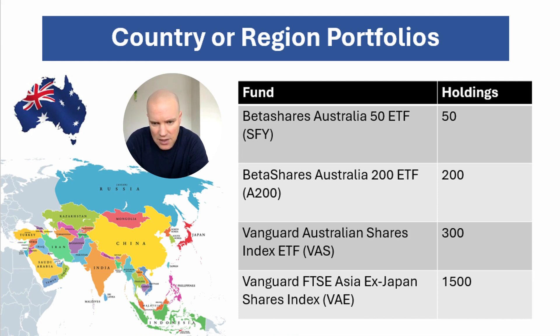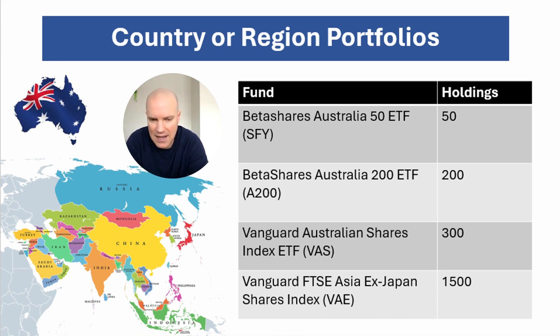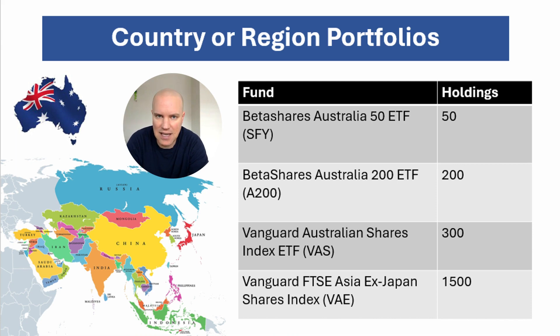I just want to point out the last ETF as an example. While it's labelled as the Asian ETF from Vanguard — the VAE — as you can see in the map, that's Asia. But the Vanguard Asian ETF only includes five or six companies, mostly China. So just be cautious of labels when you see things labelled as China or Asia, and check what's actually included and excluded in terms of an ETF.